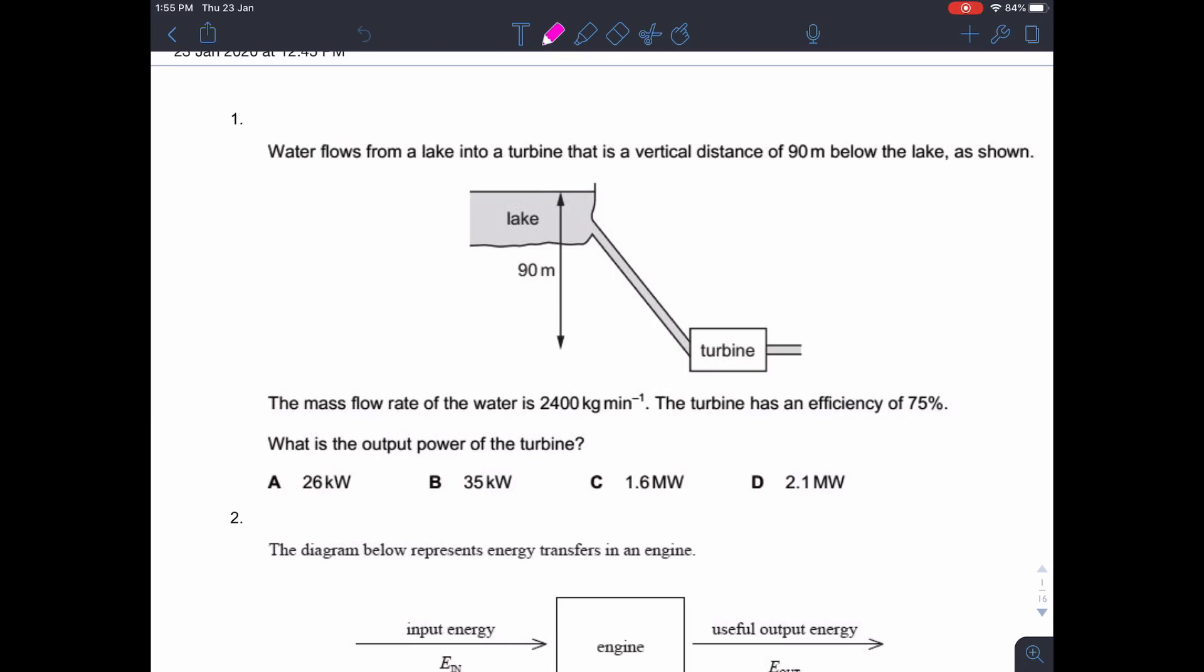Question one. We've got a lake that is higher up than a turbine, higher up above the ground, so we've got a height of 90 metres. We've got water flowing down that, and the water is flowing at 2,400 kilograms per minute. And 2,400 kilograms per minute divided by 60 is the flow rate per second. So 2,400 divided by 60 is 40, so 40 kilograms per second. And the turbine has an efficiency of 75%, which we'll come into in a minute.